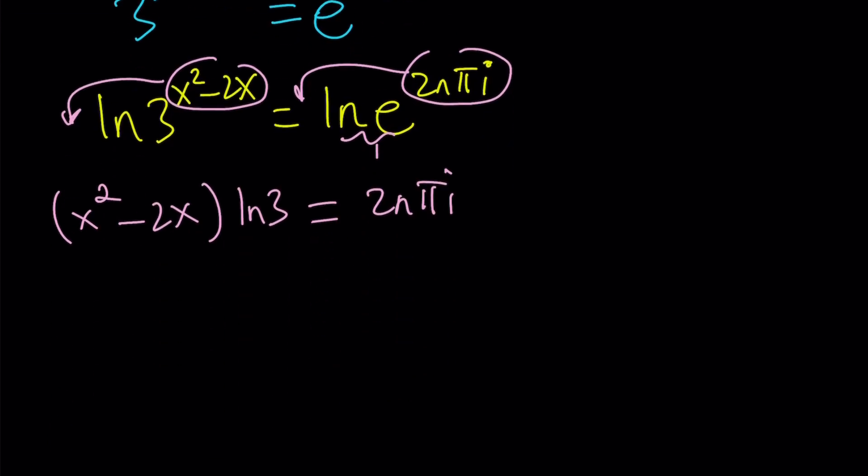Now, here's what we're going to do next. We're trying to solve for x. So let's isolate all the x terms. And let's do that by dividing both sides by ln 3. Divide by ln 3. And you're going to get the following. So far, so good. But we have x squared minus 2x.